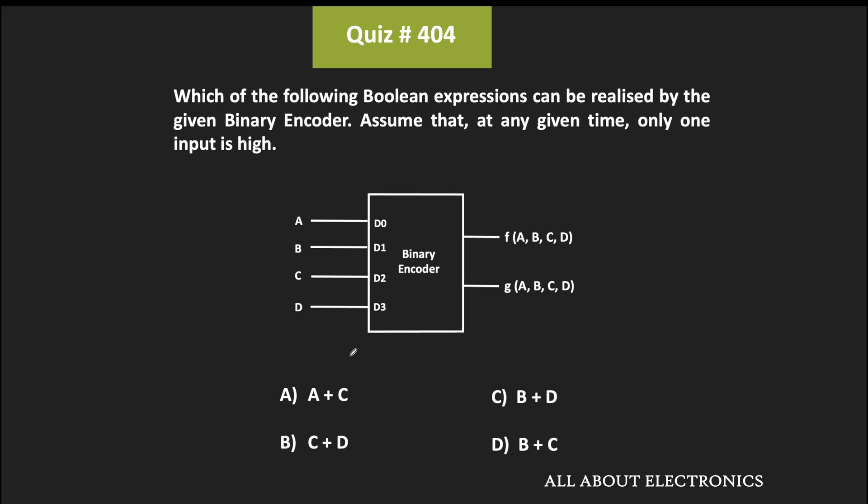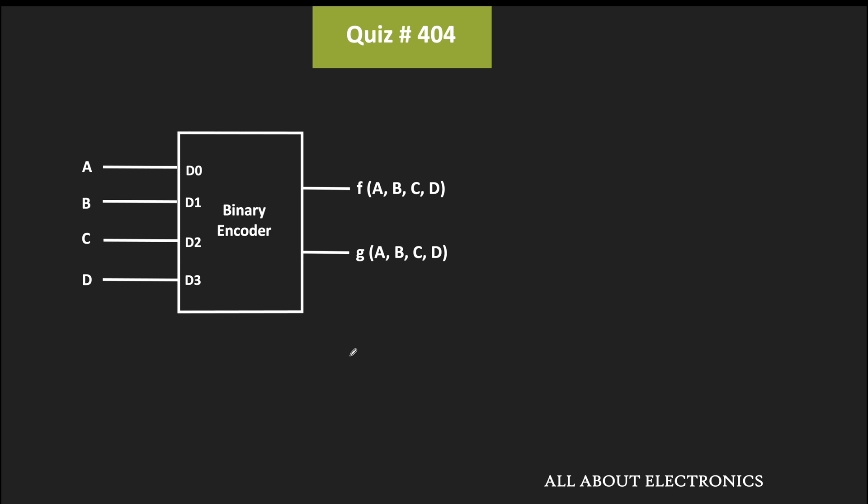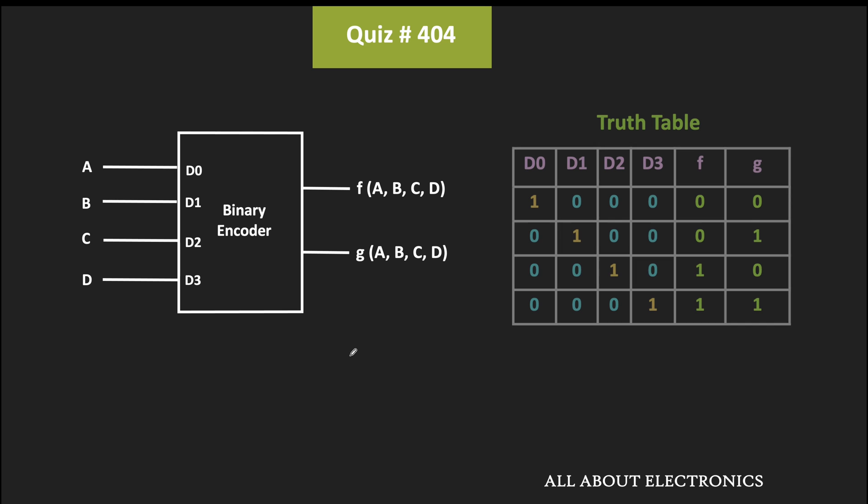If you see this binary encoder, it is the 4-to-2 binary encoder. Given that at any given time only one input is high, this is the truth table of this 4-to-2 binary encoder.